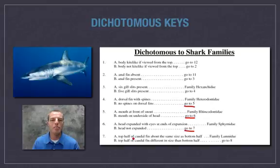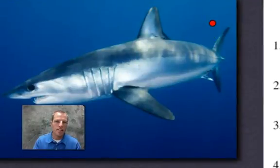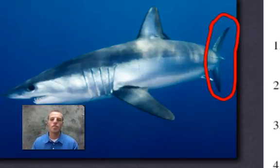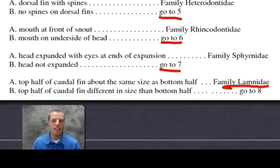Number seven asks: is the top half of the caudal fin about the same size as the bottom half, or is it different in size? The caudal fin is that back fin. Looking at it, I would say the top half is about the same size as the bottom half. That tells us the family that this particular shark is classified in — we've successfully classified the shark.